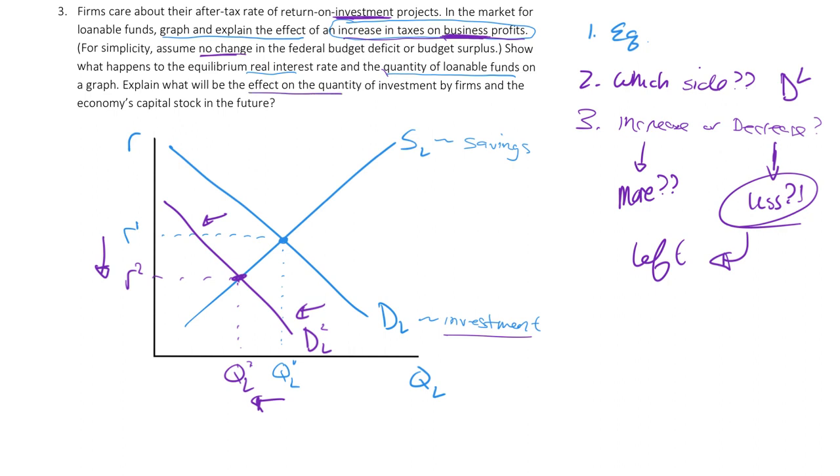Now, explain what the effect of this investment by firms will happen on the economy's capital stock in the future. Well, future capital stock, which is the future capital, which are like machines, anything like that, will decrease. We know that'll decrease because the quantity of loanable funds are going down. We're not going to be investing in the future of our businesses. So there you have it.